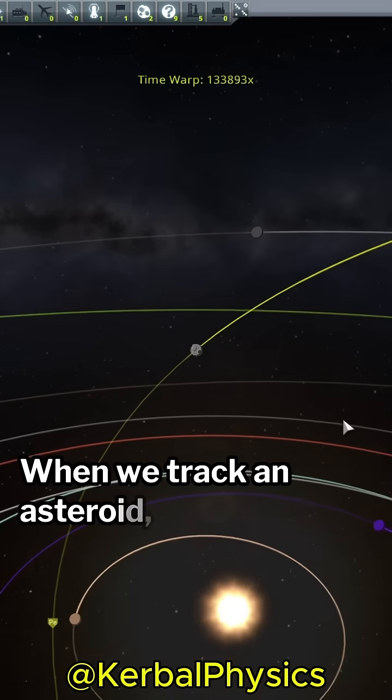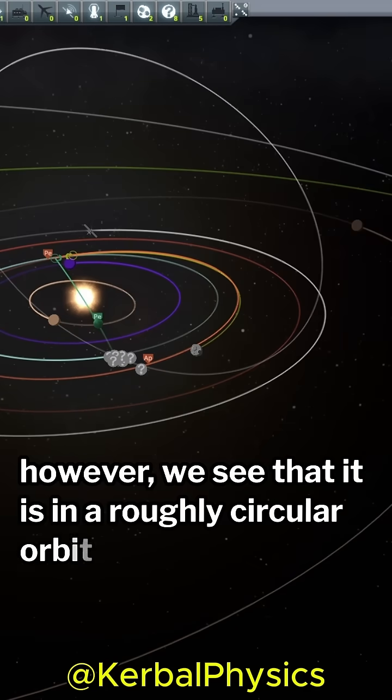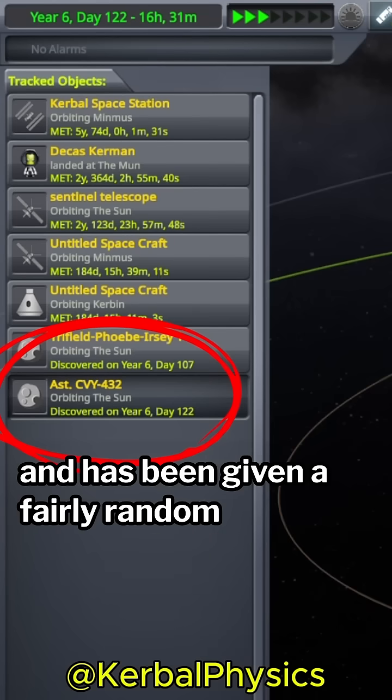When we track an asteroid, however, we see that it is in a roughly circular orbit, and has been given a fairly random designation.